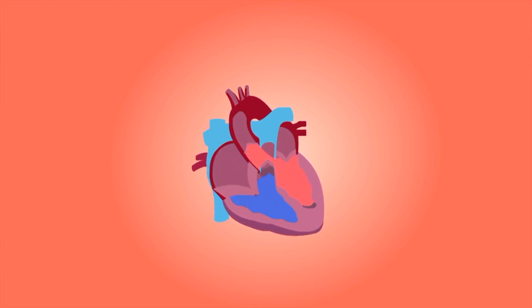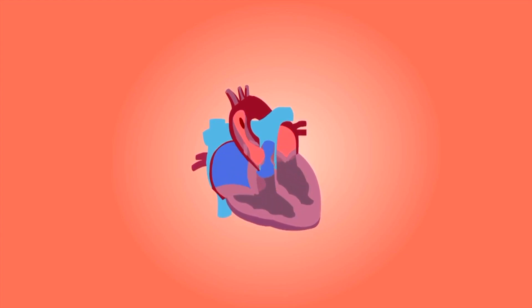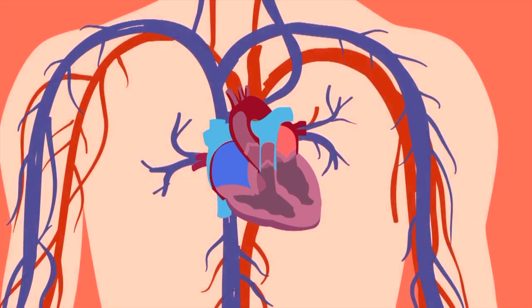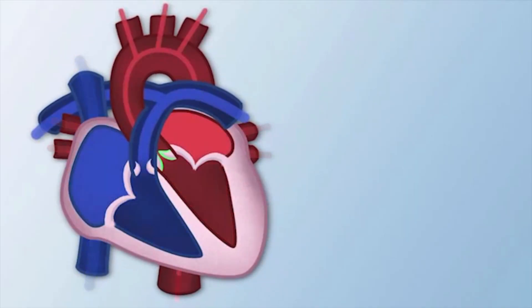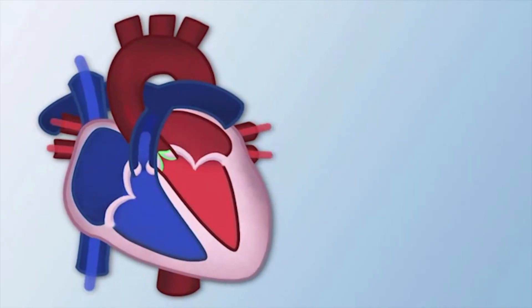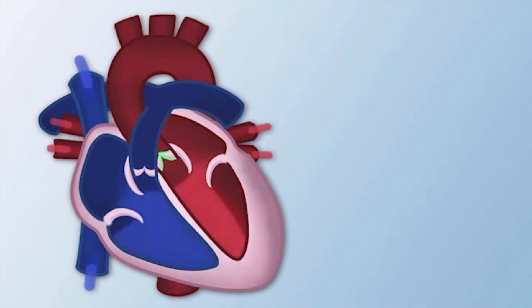When you say cardiac, you mean anything that pertains to the heart in general. It could be structural, involving the different layers of the heart. You have the layer that covers the heart called the pericardium, the muscle of the heart itself called the myocardium, and then the inner lining of the heart called the endocardium.